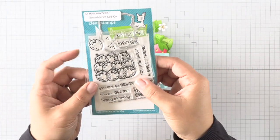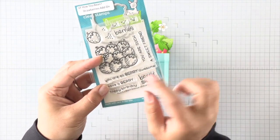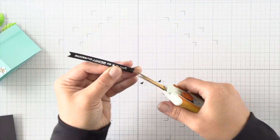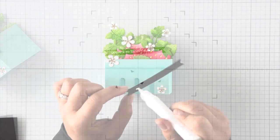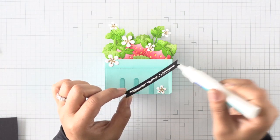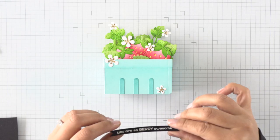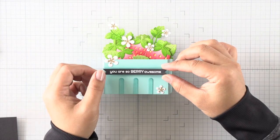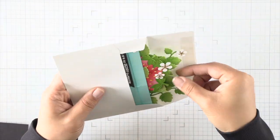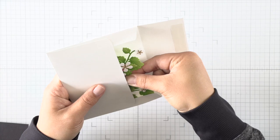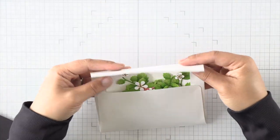To finish the card, I'm using a sentiment from the How You Bean Strawberries add-on stamp set. I've gone ahead and stamped and embossed the sentiment in white over some black cardstock, and I added some fishtails at the end of my sentiment strip to give it a more decorative end. Then I'll adhere that over my card box. As you can see now, it fits inside an A2-sized envelope just perfect.